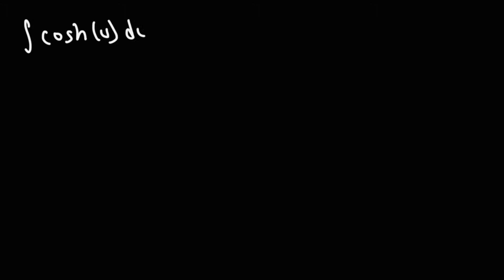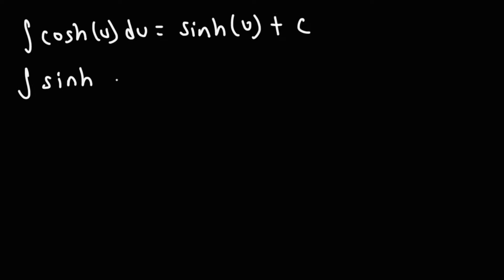The indefinite integral of hyperbolic cosine is hyperbolic sine — it's the opposite of the derivatives. The derivative of hyperbolic sine is cosine, so the anti-derivative of hyperbolic sine is hyperbolic cosine plus C.